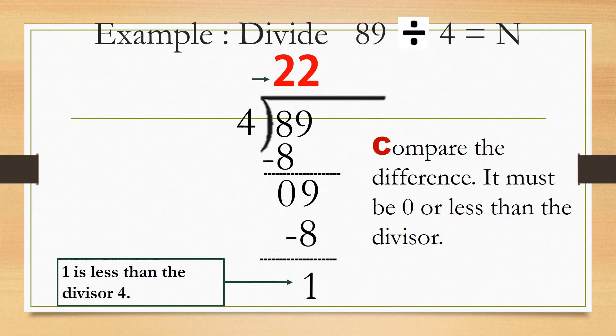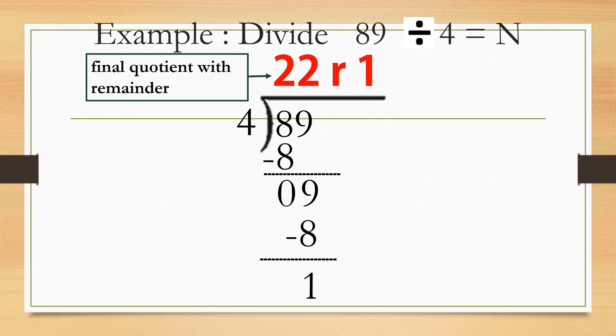Let's go to C — compare the difference. It must be 0 or less than the divisor. Here, 1 is the difference and 1 is less than the divisor. Because there are no more digits to divide, our final quotient is 22 with a remainder of 1.